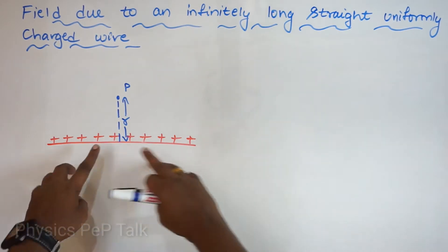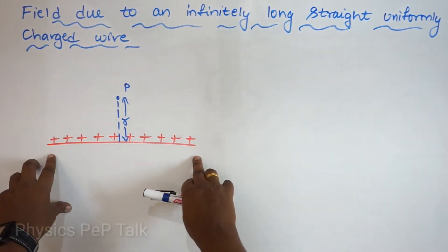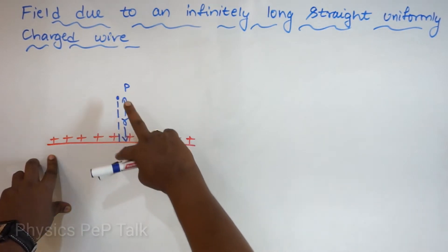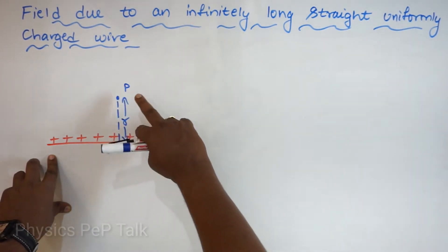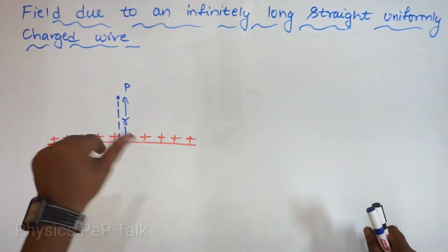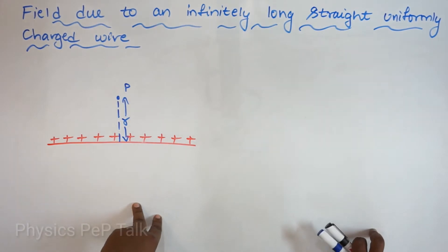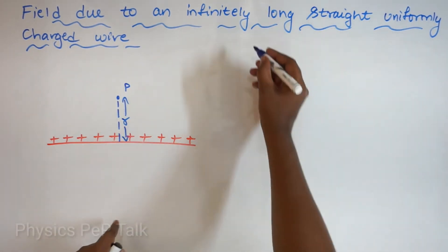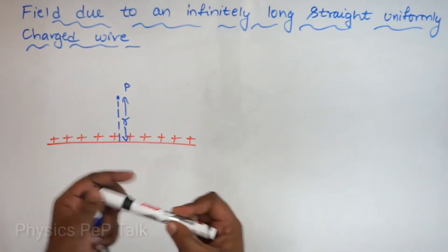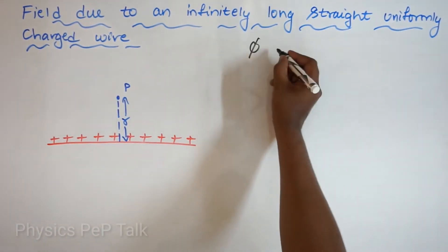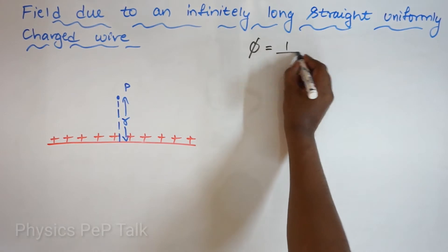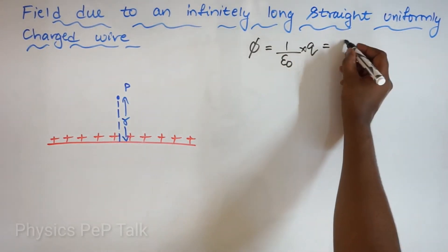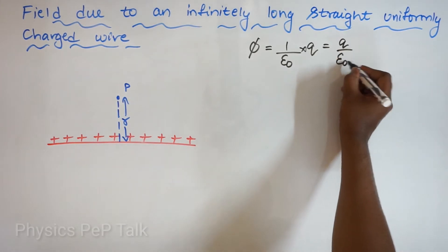Consider a wire which is uniformly charged throughout its length. At point P, which is separated from the wire by distance R, we need to find the electric field using Gauss law. Gauss law states that the total electric flux passing through any closed surface will be 1 by epsilon naught times the charge enclosed within that system, that is Q by epsilon naught.